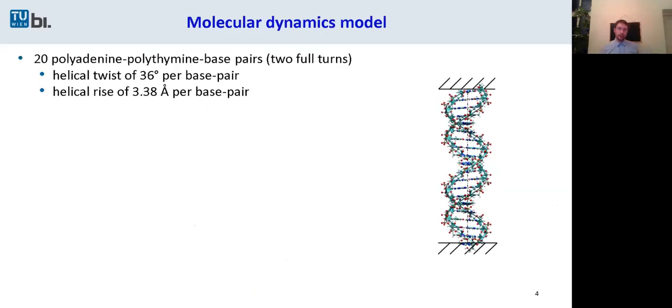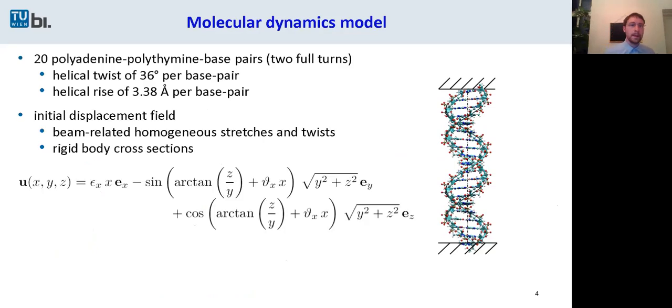This molecular dynamics model consists of 20 polyadeninе-polythymine base pairs, that's two full turns, with a helical twist of 36 degrees per base pair, a helical rise of about 3.4 angstrom per base pair. We choose an initial displacement field which is related to homogeneous stretch and twist, with a rigid body cross-section.